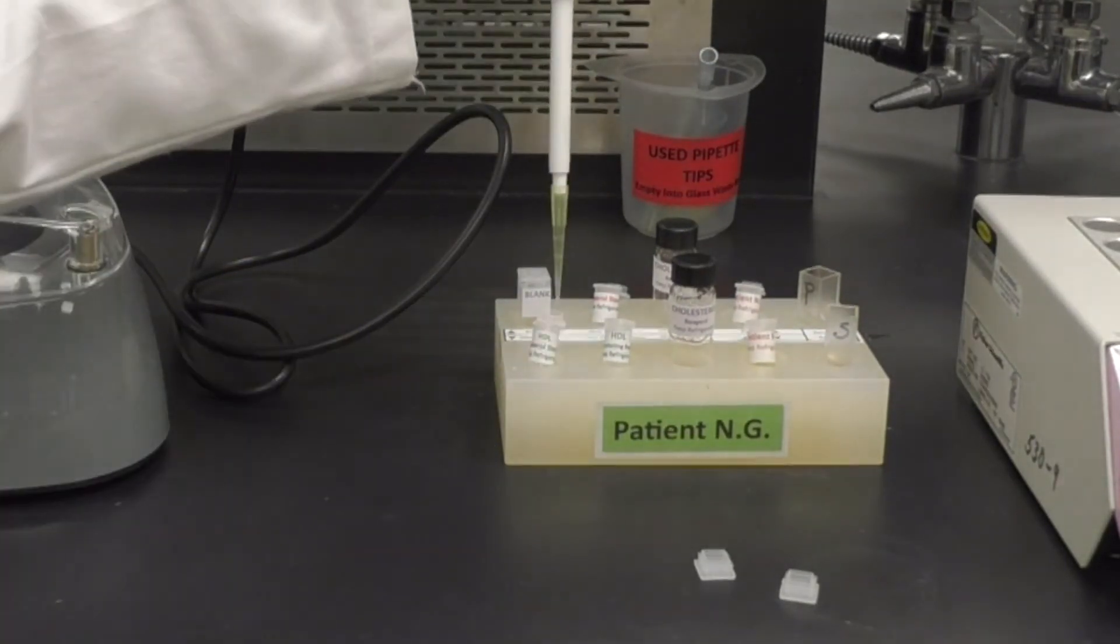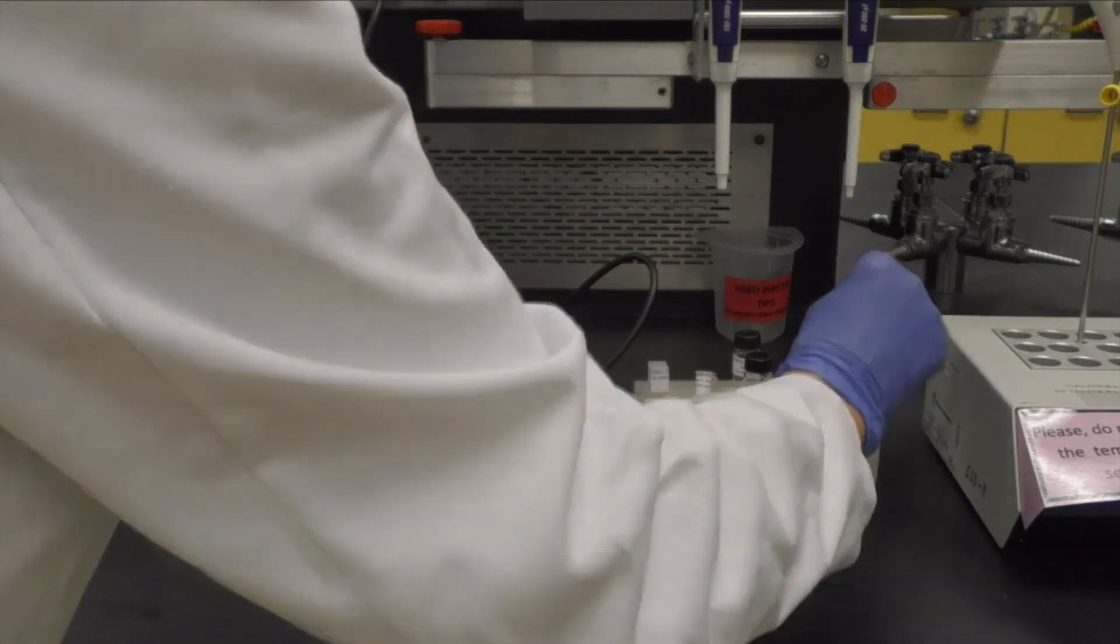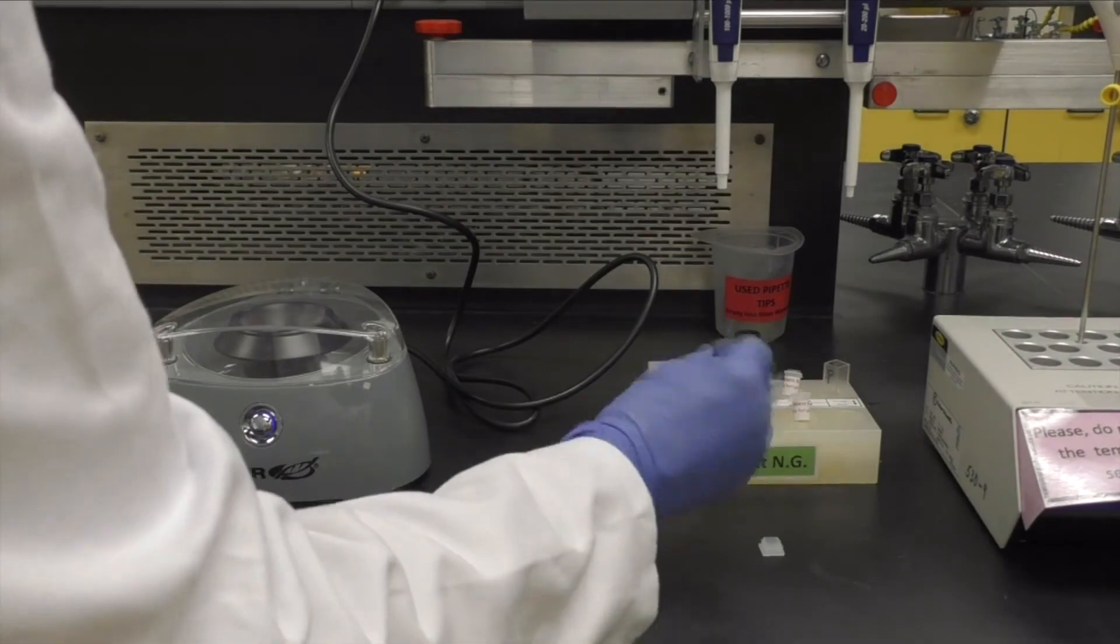Add 50 microliters of the HDL standard into the cuvette labeled as standard and rotate to mix. Place it in the dry bath for 5 minutes.